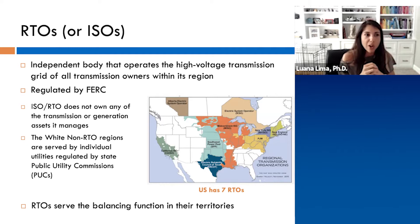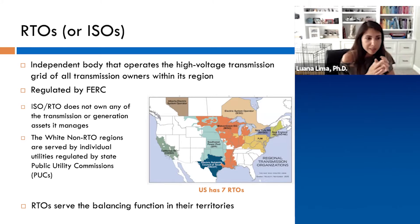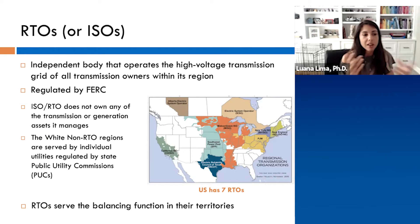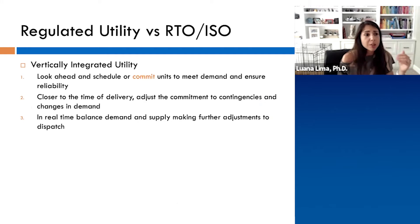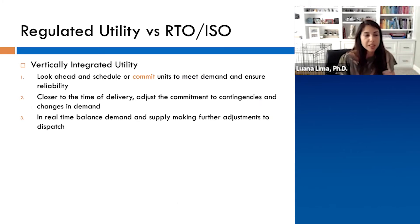We have seven RTOs in the US. They don't own any of the transmission or generation assets — they basically just operate them. The non-RTO regions are served by individual utilities regulated by the public utility commissions. The RTOs serve the balancing function in their territories. For territories with a vertically integrated utility, they look ahead and schedule or commit units to meet demand and ensure reliability.